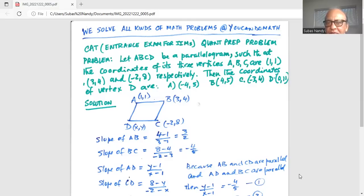A is (-4,5), B is (4,5), option C is (-3,4), and option D is (0,11).